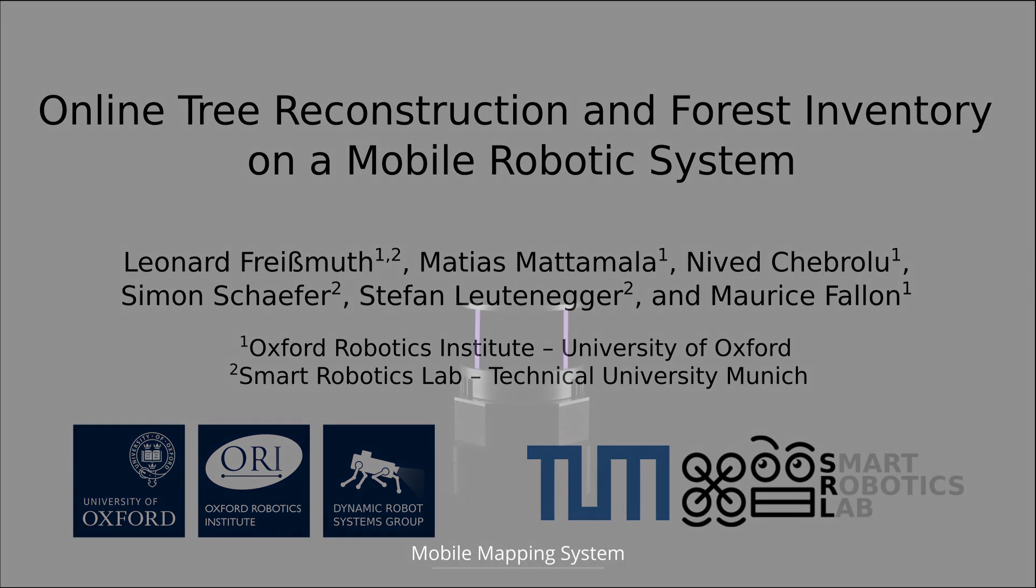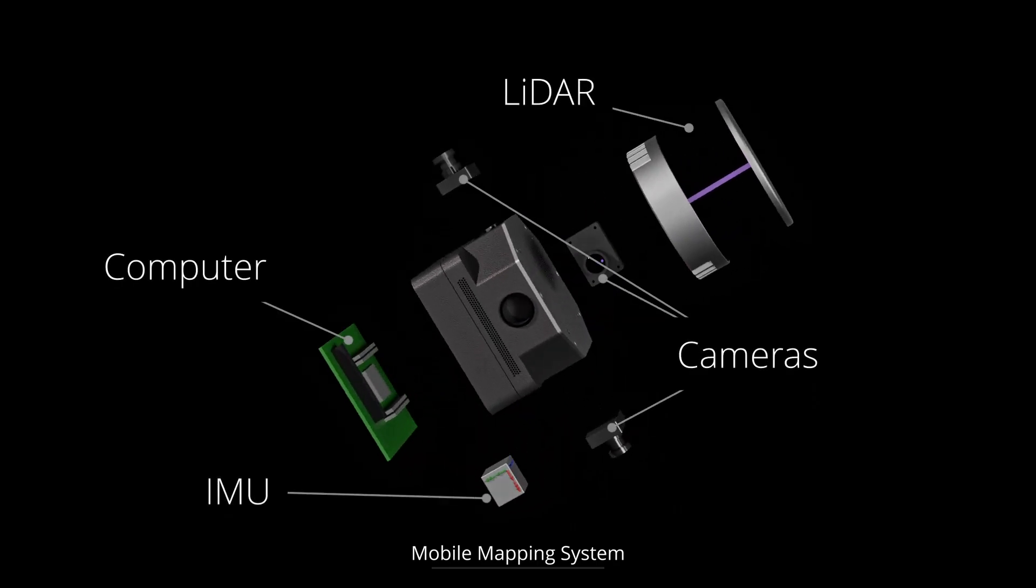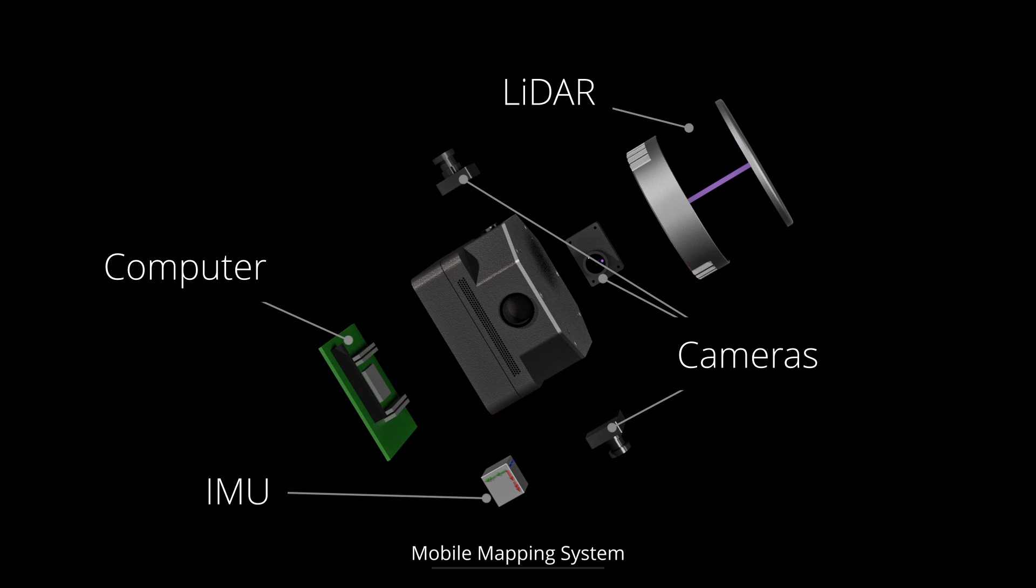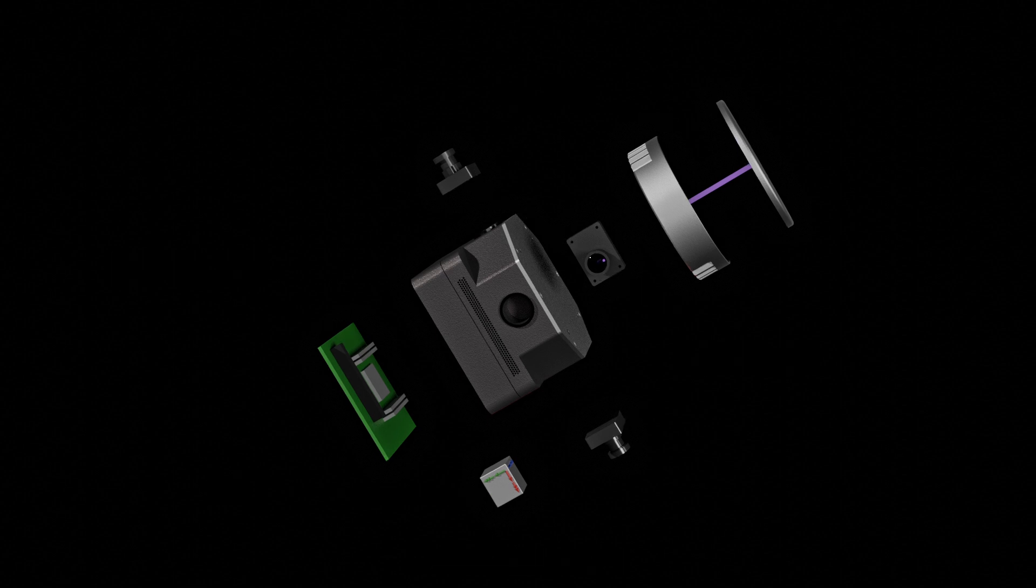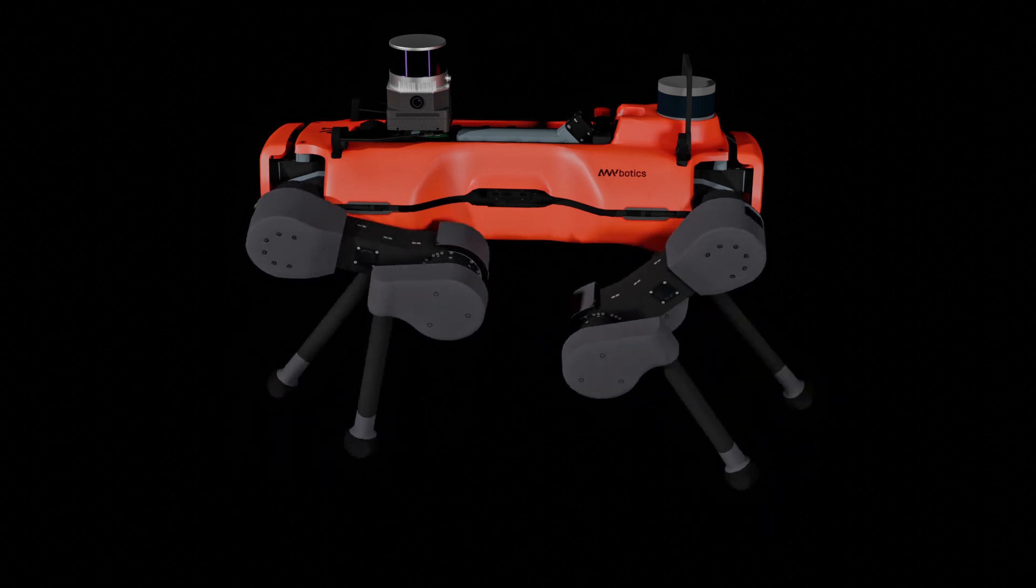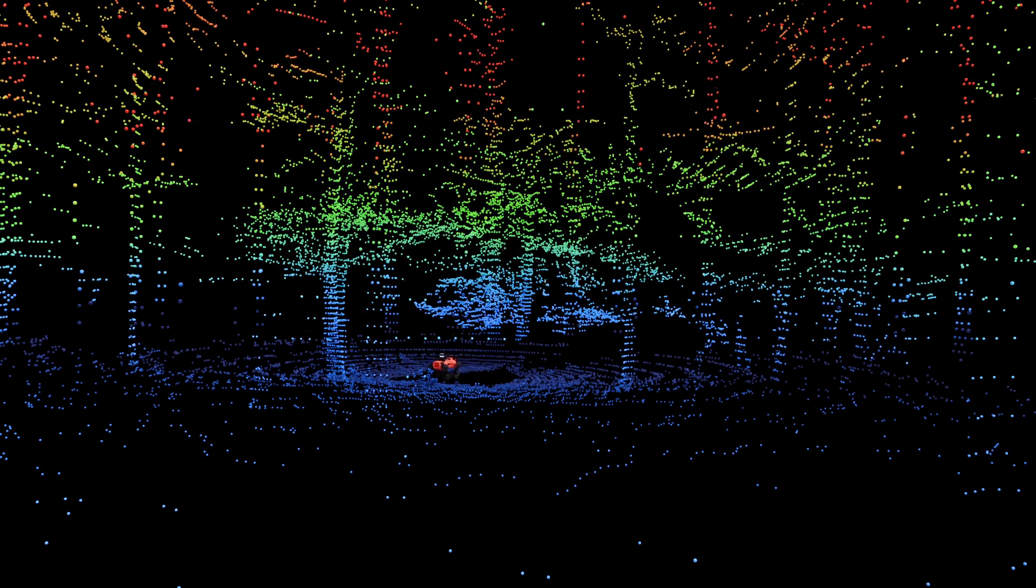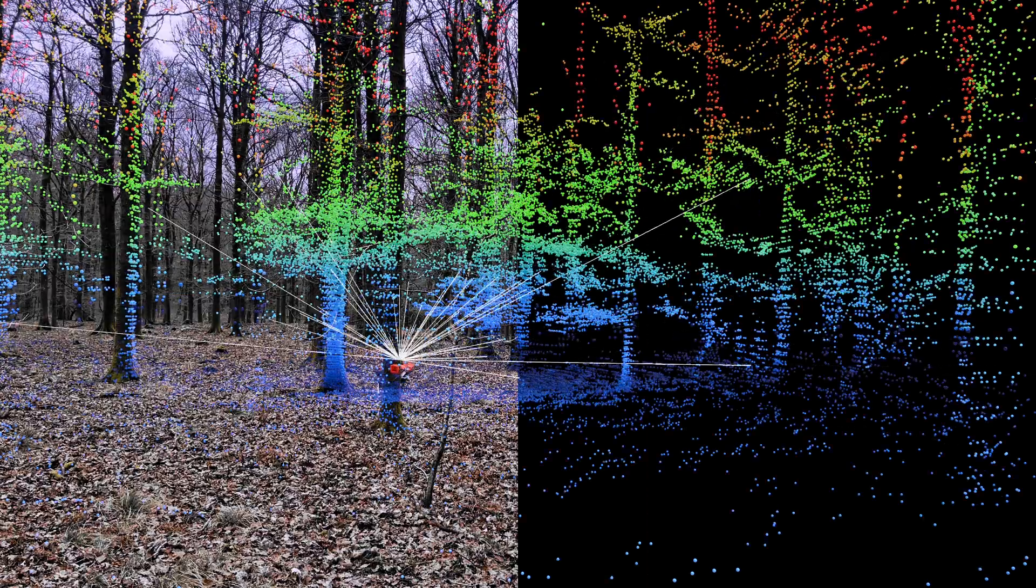Our pipeline runs in real-time on a mobile mapping system which consists of a LiDAR, an IMU, three cameras, and a small compute unit. With its compact form factor, the mapping system can easily be carried on a backpack or mounted on a mobile robot such as the ANYmal.